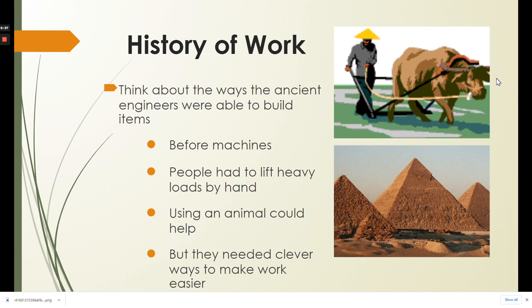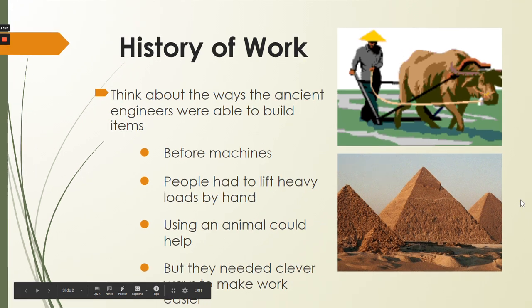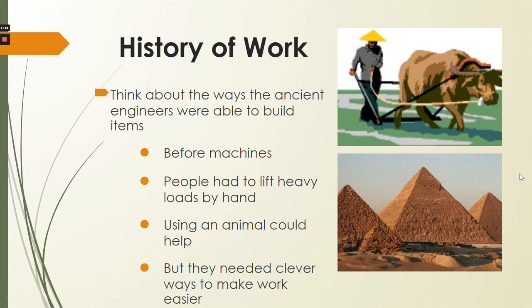Let's think about the history of work in terms of the real world. Think about the ways that ancient engineers were able to build items. They had to create and build things before machines — they had to lift heavy loads by hand. Oftentimes they used animals, but they still needed clever ways to make work easier, to build things, to move things a great distance. That's where simple machines came in. You can think back to what you learned in your ancient engineering project and see what kinds of simple machines you've already done some learning about.